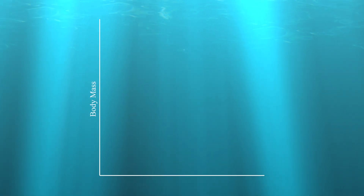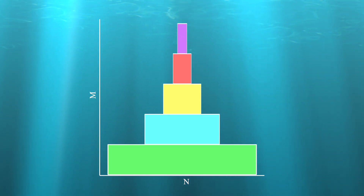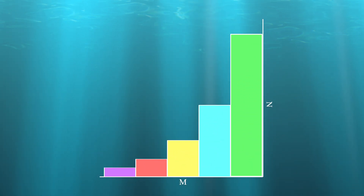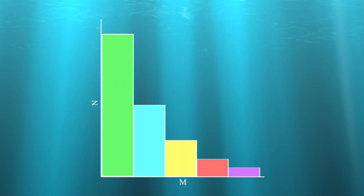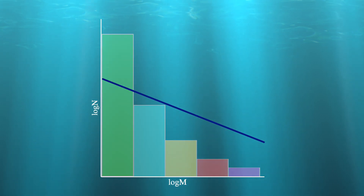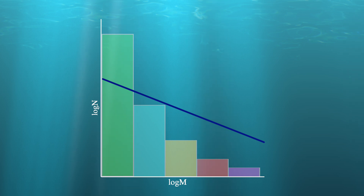Let's look at a graph depicting a size-based pyramid, where different mass categories are stacked on top of each other, and their size is represented by the abundance. The body mass, or M, will increase as abundance, or N, will decrease with each mass category. If we take this pyramid depicting abundance at different body masses, we can align those numbers with the y-axis, rotate the axis 90 degrees so that the mass is on the x-axis and the abundance on the y-axis, and then flip it so your y-axis is on the left. You can notice abundance decreases almost exponentially as mass increases. By applying a logarithmic scale, this curve can be converted to a linear slope. This linear relationship is known as size spectrum.